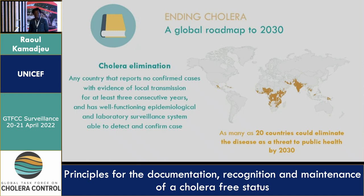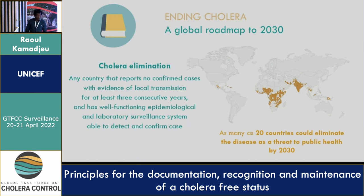There's a clear definition of cholera elimination in the road map. It's very clear that countries should not report confirmed cases of cholera — there's no evidence of local transmission. And of course, we have to trust the surveillance system, because if you say that you don't have cholera, we have to trust that the systems you have in place are actually trustworthy.